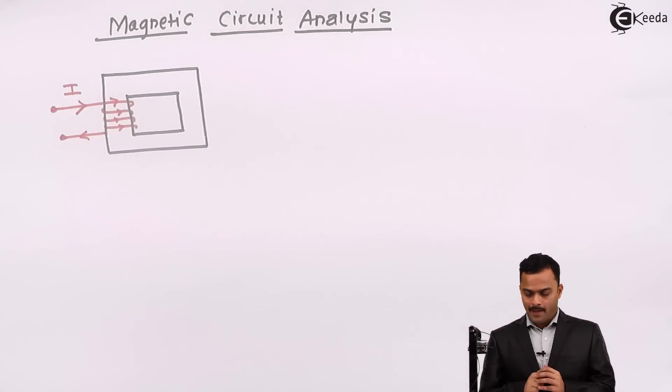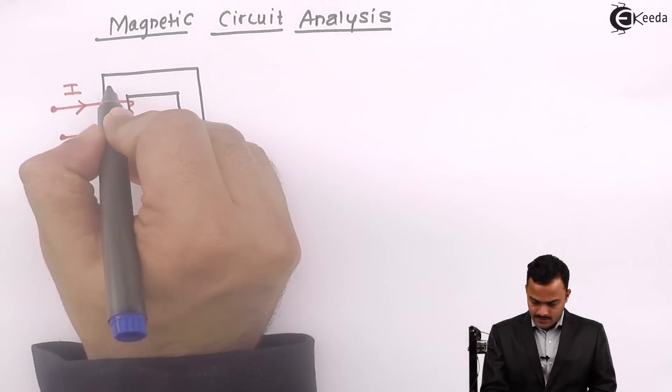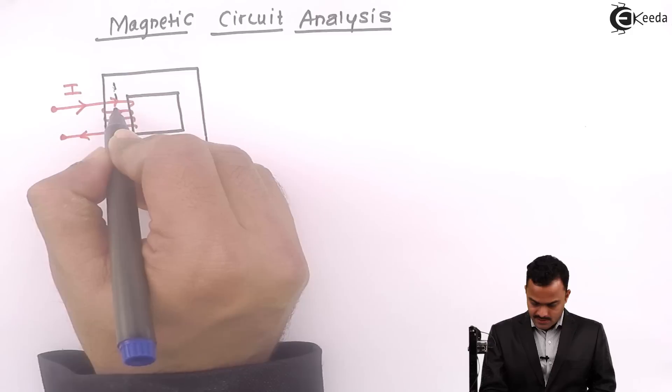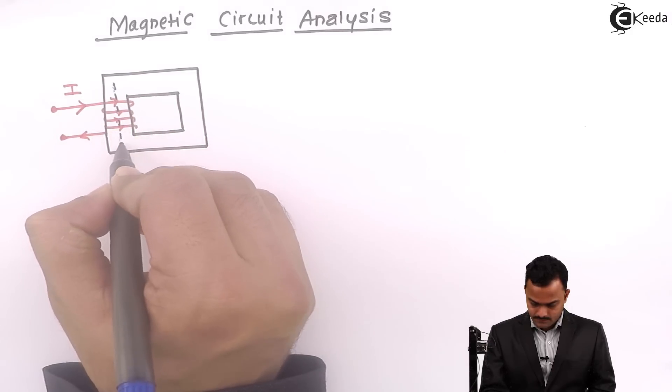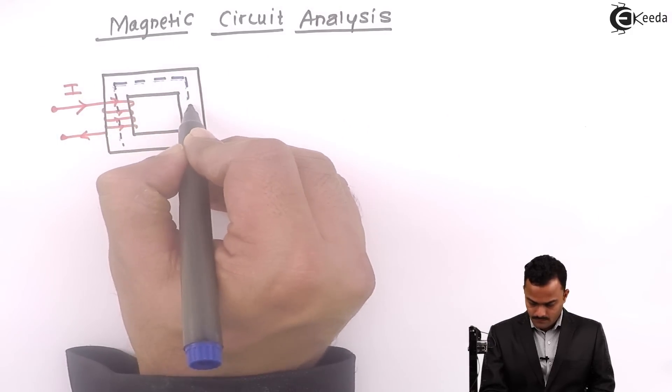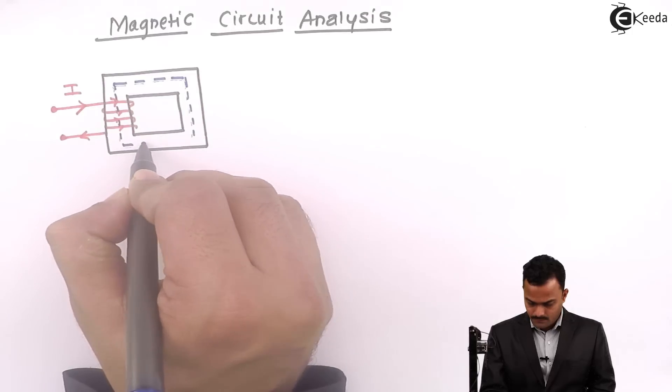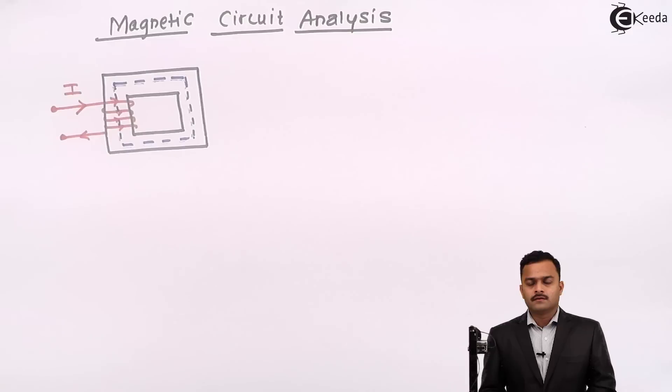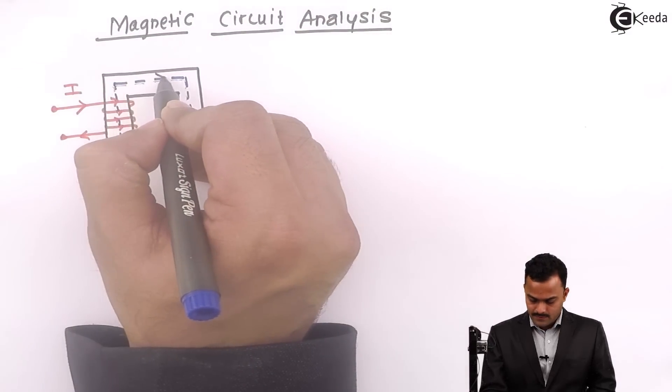By right-hand thumb rule, the magnetic flux will be in the upward direction. If I consider these are the curled fingers determining the current, then the outside thumb will give you the direction of magnetic flux. So this is the magnetic flux in this direction.